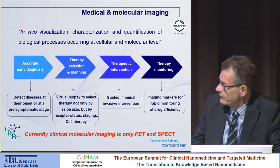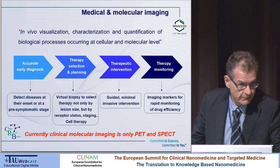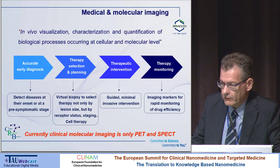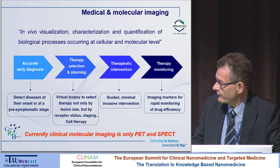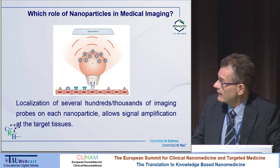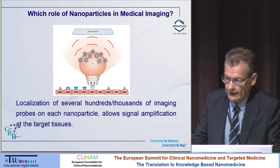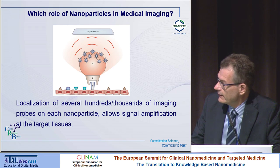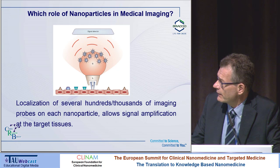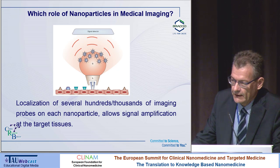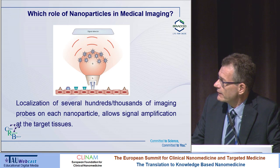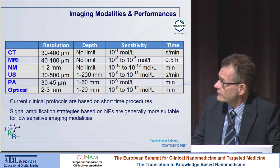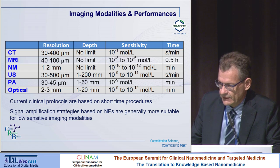Today, molecular imaging only exists in PET and SPECT applications with small molecules. The question is how we can translate molecular imaging into the field of nanotechnologies or similar systems. Nanoparticles can offer several advantages in principle — one of the most important recognized in the past is the possibility to have signal amplification in the process of recognizing specific epitopes.